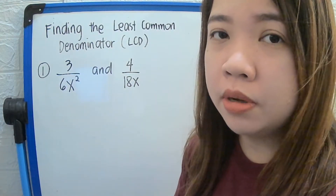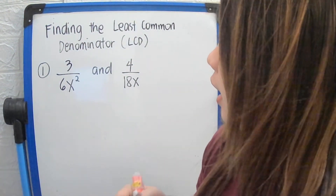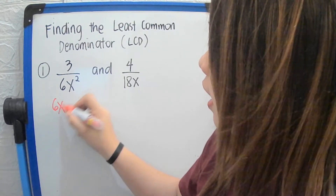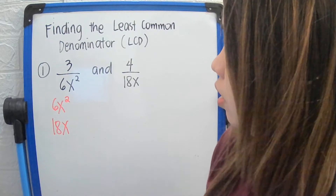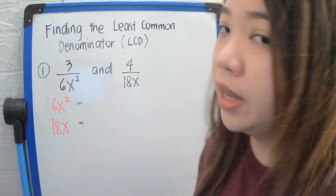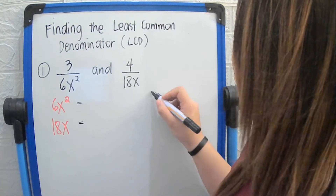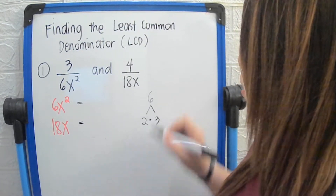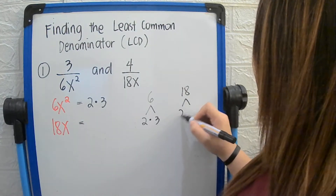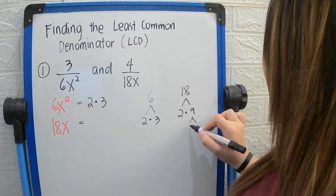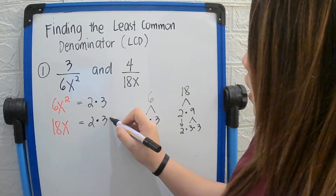Since this is least common denominator, we take the denominators only. For the first rational algebraic expression, we have 6x squared. For the second denominator, we have 18x. We get the prime factors of 6, which is 2 multiplied by 3. For 18, we have 2 times 9, and 9 is equivalent to 3 times 3, so the prime factors are 2 times 3 times 3.